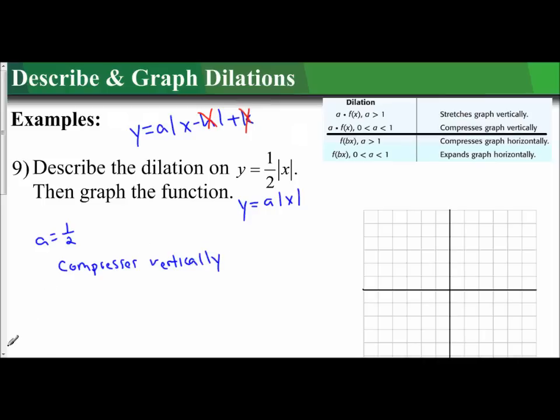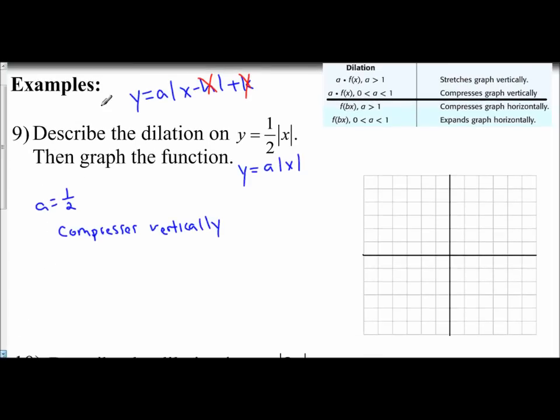We're going to graph the parent function first, the absolute value of x. The points are (0,0), (1,1), (2,2), (3,3), (-1,1), (-2,2), and (-3,3). We'll use a dashed line for this.